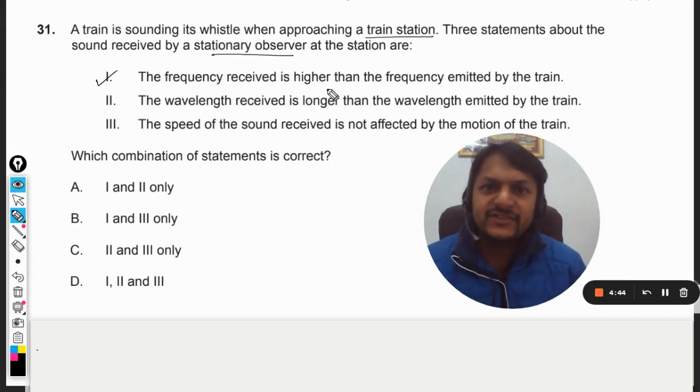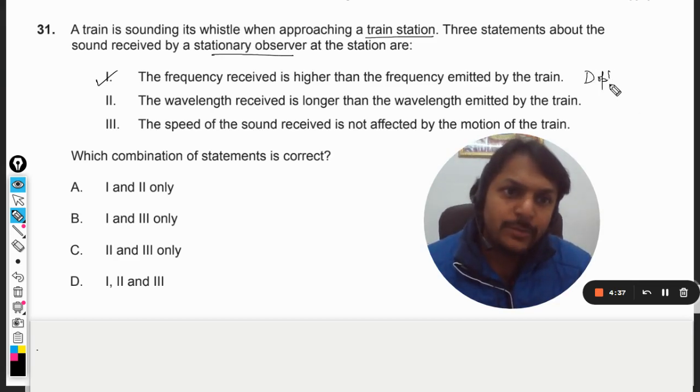The frequency received is higher than the frequency emitted by the train. Well, of course, that is what is known as Doppler's effect.